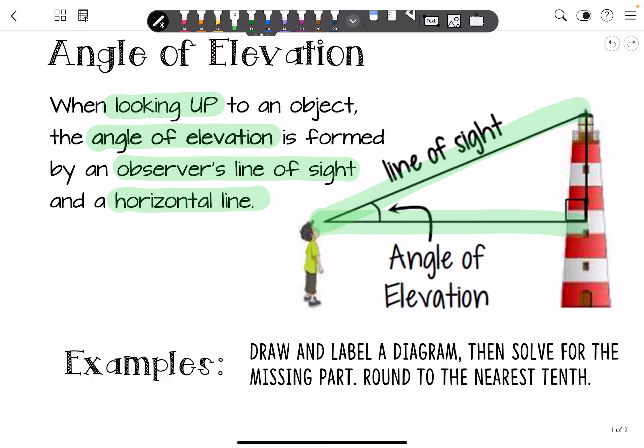Now we're going to do some examples for each, the angle of elevation and the angle of depression. First, we're only working on angle of elevation. Remember that you're going to draw and label a diagram. This is super helpful in anything geometry. And then you're going to solve for the missing part. I want you to round to the nearest tenth here. I'll always let you know if we're rounding to the nearest tenth, hundredth, nearest whole number, whatever it is that we're working with.